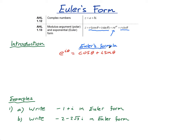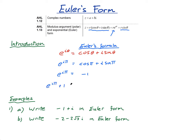Euler's formula is a pretty impressive formula where he connects e, i, and the trig ratios cos and sin. Even more impressive is Euler's identity — when you put π in for θ, you get e^(iπ) = cos π + i sin π, which gives e^(iπ) = -1 + 0, or e^(iπ) + 1 = 0.